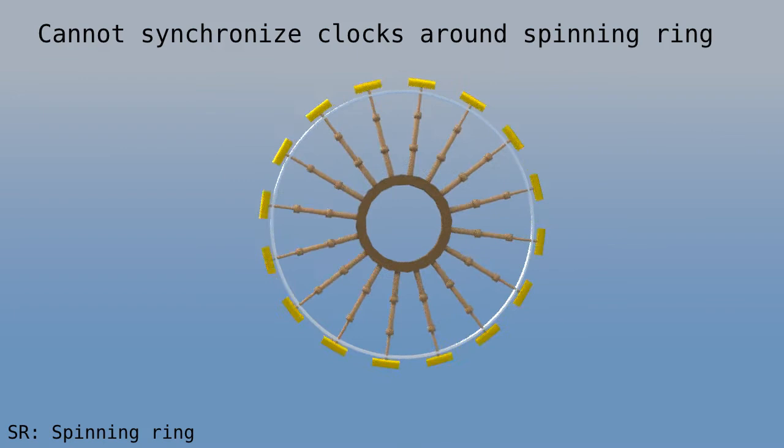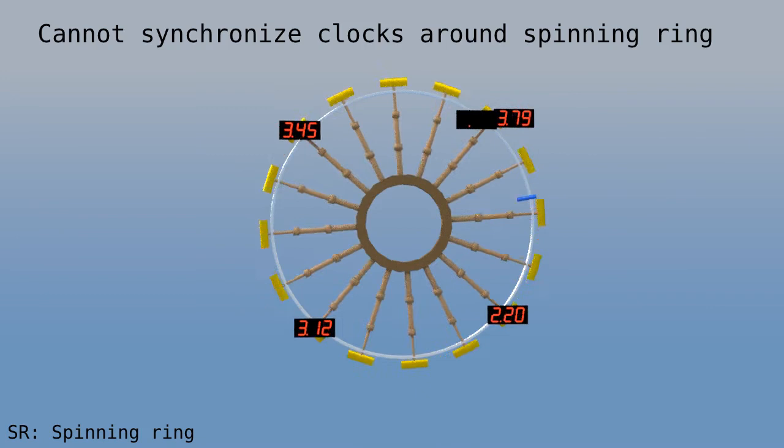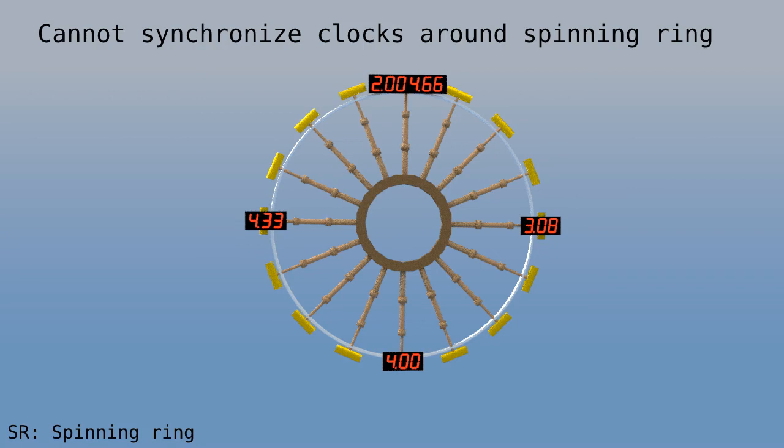And if we try to synchronize clocks, the light flashes go at different speeds relative to the ring. And so we cannot synchronize all the way around the ring when the ring spins. Let's play that back one more time.